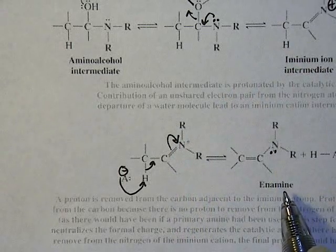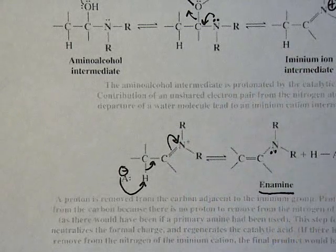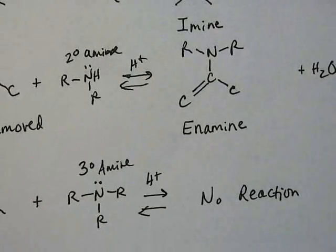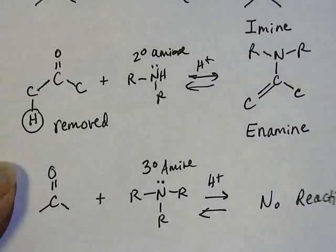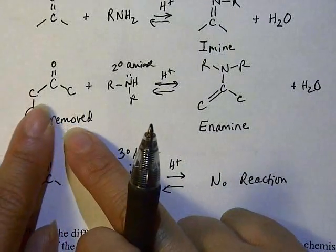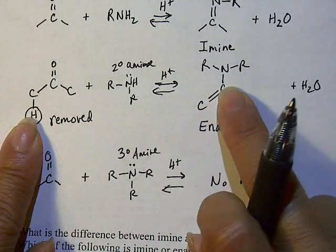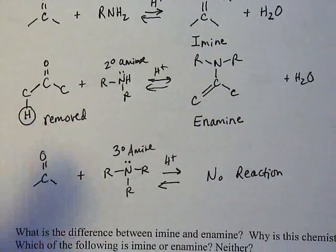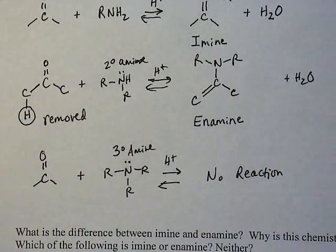That's going to give the lone pair back to the nitrogen. So you see that right there, and that's how the enamine is formed. Just like we saw before in the overall reaction, this proton is what is removed to form the double bond, and notice the water is the byproduct.